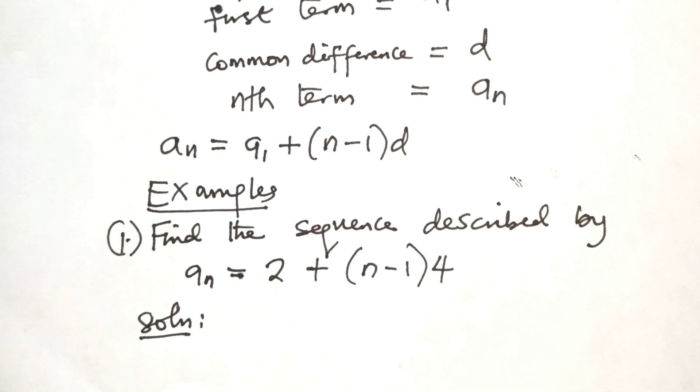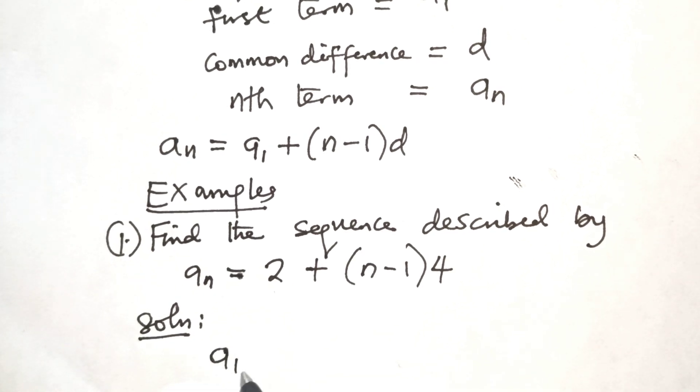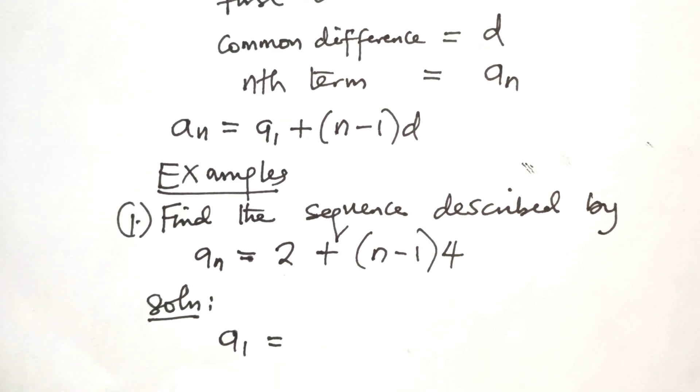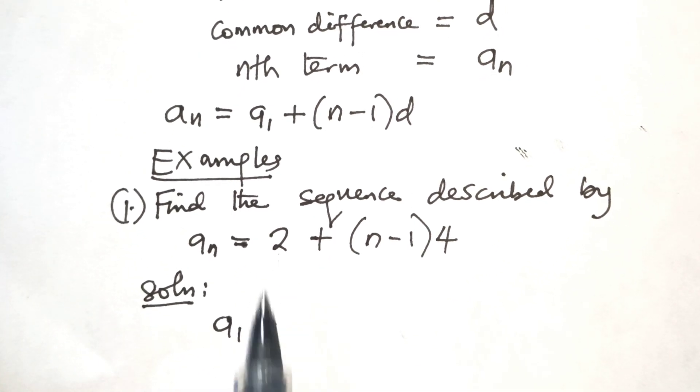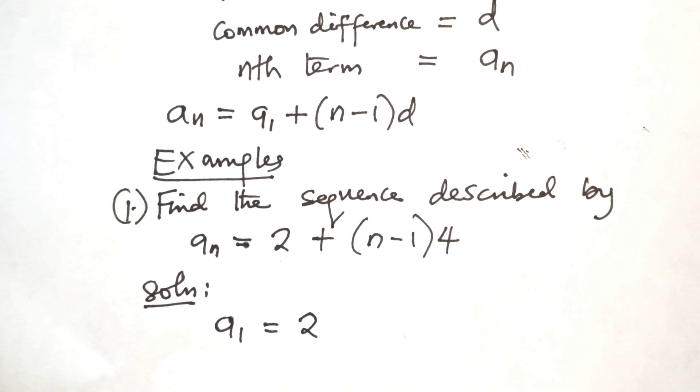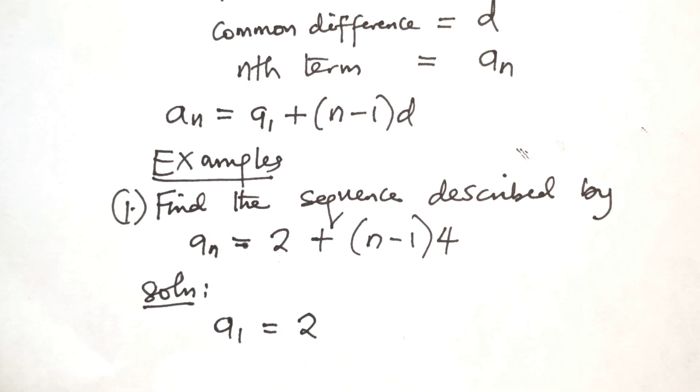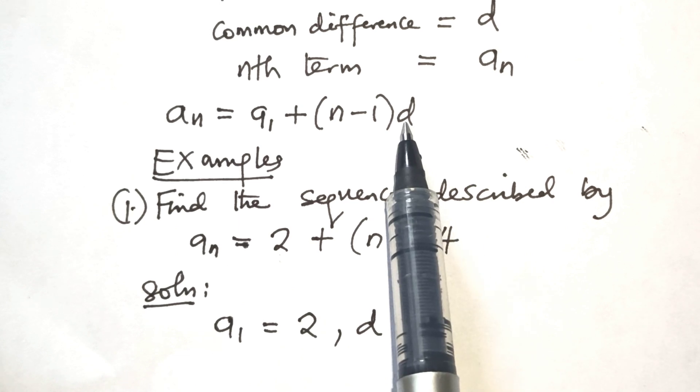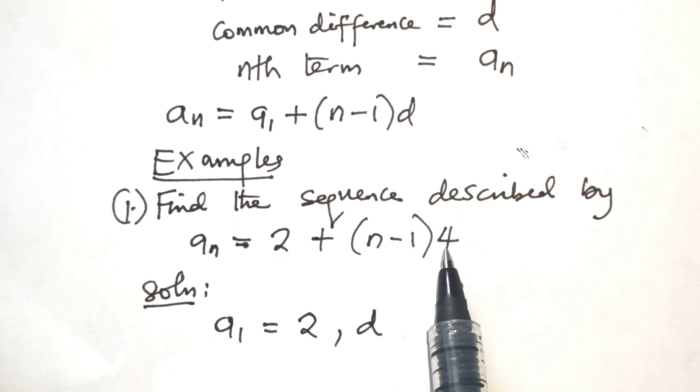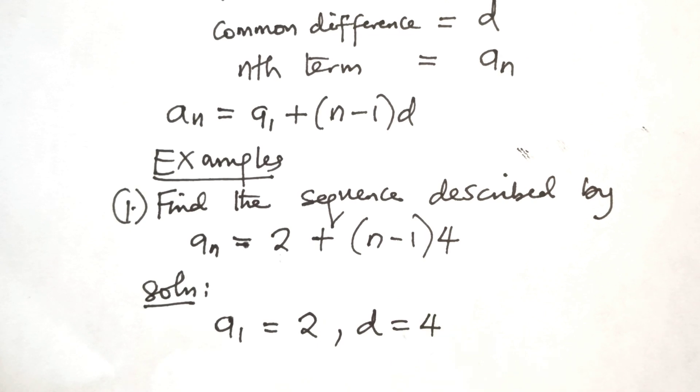In the sequence, A1 is the first term and that is equal to 2. So we write A1 equals 2. D here is the position for D, so what we have here is 4. So D is equal to 4.